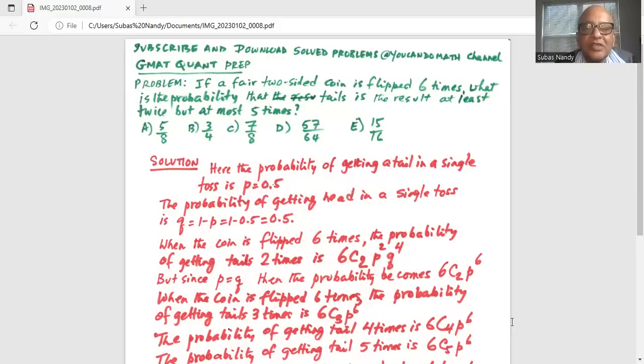When a coin is flipped six times, the probability of getting tails two times is six combination two. That means out of six items, two are taken multiplied by P, probability of getting a tail raised to the power of two and multiplied by Q, which is the probability of getting a head raised to the power of four. But since P is equal to Q, both of them equal to 0.5, the probability of getting exactly two tails when you flip a coin six times is 6C2. P and Q are same. So it is P raised to the power of six.